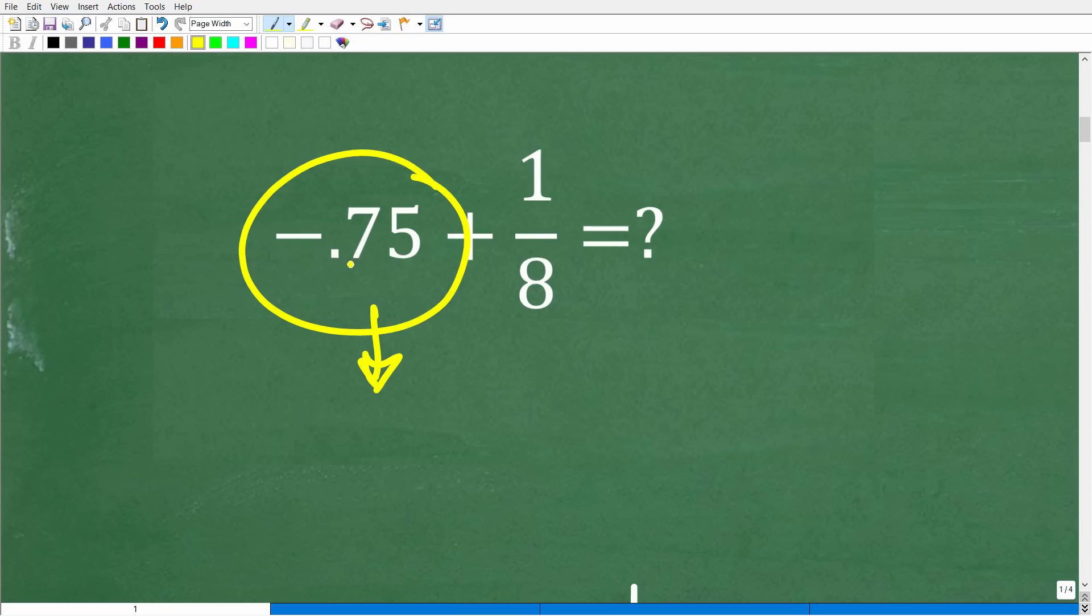Alright, so we have negative 0.75. Let's just take a look at the decimal 0.75. So how do we read this with place value? So the 7 is in the tenths place and the 5 is in the hundredths place. So 0.75 is equal to the fraction 75 hundredths.